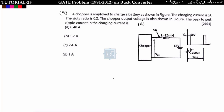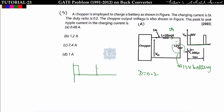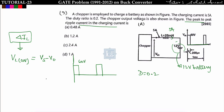The third problem: a chopper is used to charge a 12 volt battery. The charging current is 5 ampere, duty ratio is 0.2, and the chopper output voltage waveform is shown. Maximum voltage is 60 volts. We need to find the peak-to-peak ripple current ΔiL. To find ΔiL, first find V_L_on, which equals V_s minus V_naught. From the output voltage waveform, during on condition the output equals the supply voltage, so V_s = 60 volt.